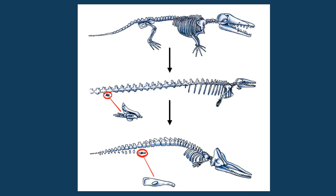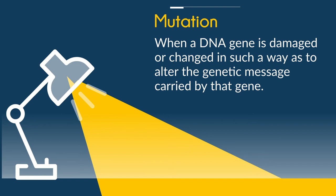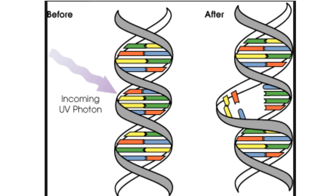Finally, we have mutation: when a DNA gene is damaged or changed in such a way as to alter the genetic message carried by that gene. And here's a picture of a mutation.